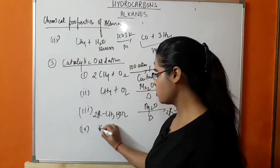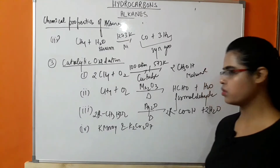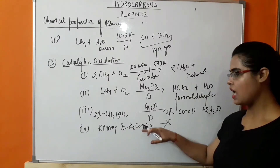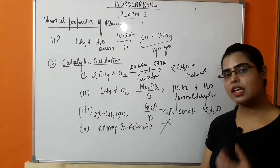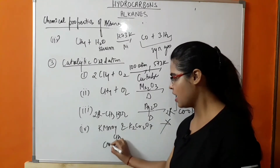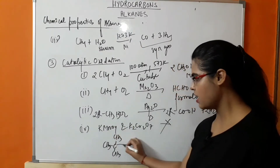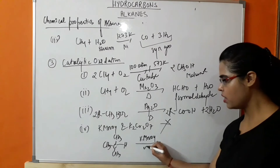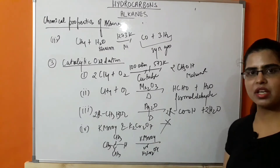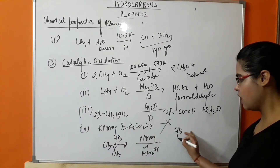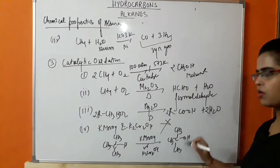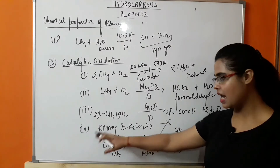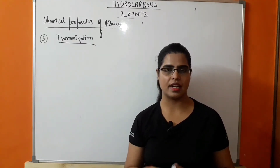Fourth: in the presence of KMnO4/H2O or K2Cr2O7 (potassium dichromate), alkane will not show a reaction — these act as oxidizing agents. However, in the case of a branched chain alkane, if tertiary alkane is taken, these reagents will oxidize the tertiary hydrogen, forming a tertiary alcohol. So this reaction with KMnO4 or K2Cr2O7 is only shown when tertiary alkane is taken.